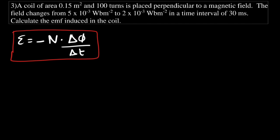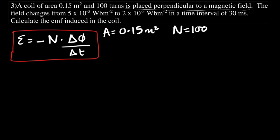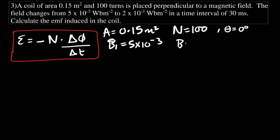From the question: area = 0.15 m², N = 100 turns. The field is placed perpendicular to the coil, which means theta = 0 degrees. The field changes from B₁ = 5×10⁻³ Tesla to B₂ = 2×10⁻³ Tesla. The time interval is 30 milliseconds.